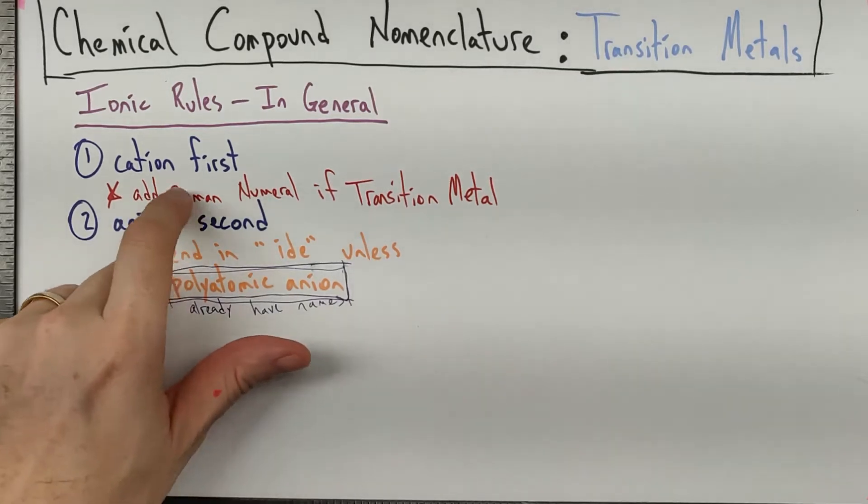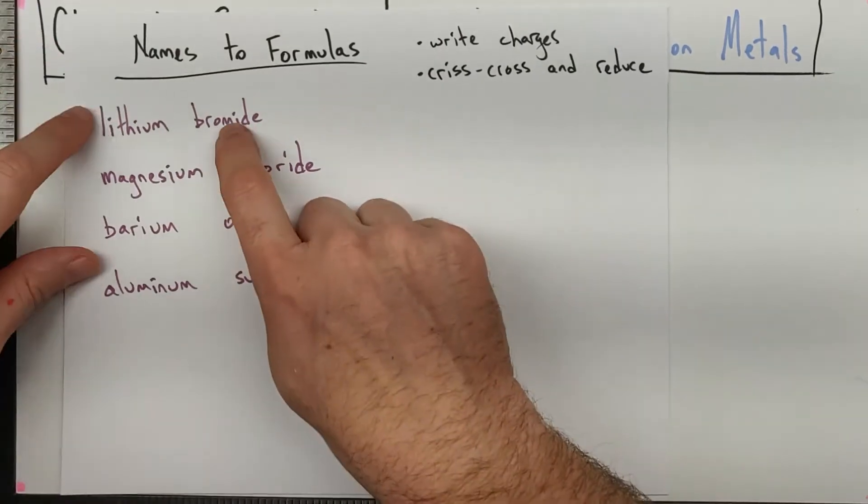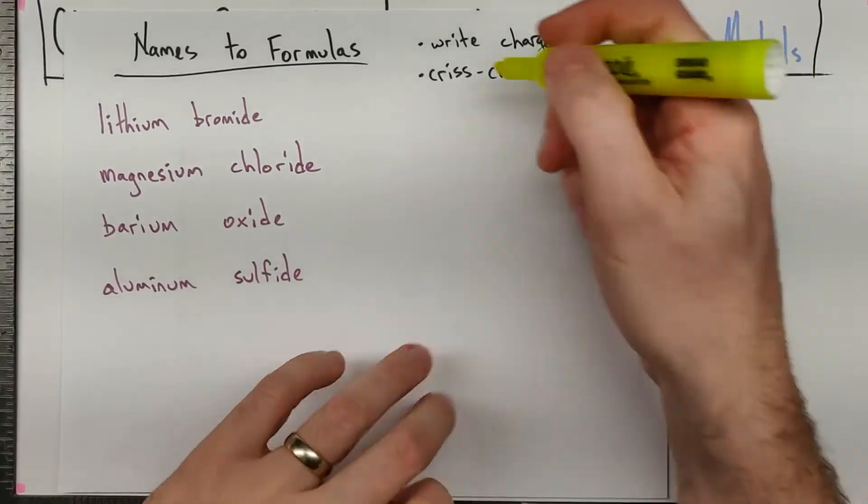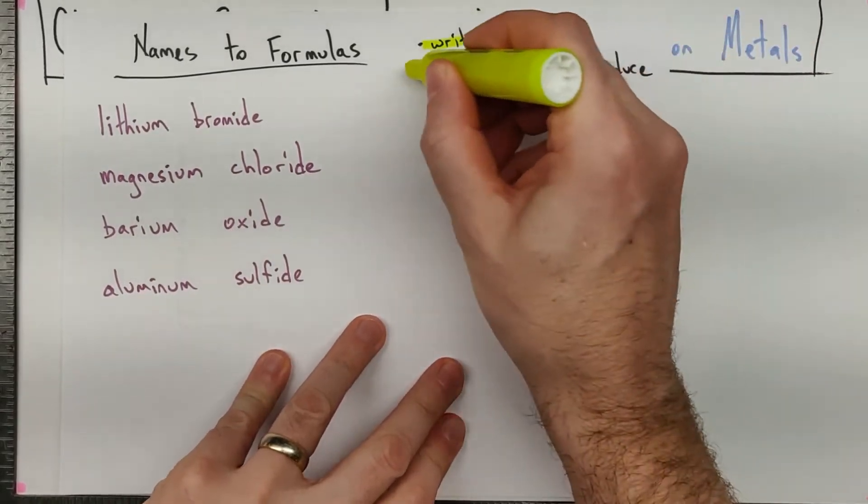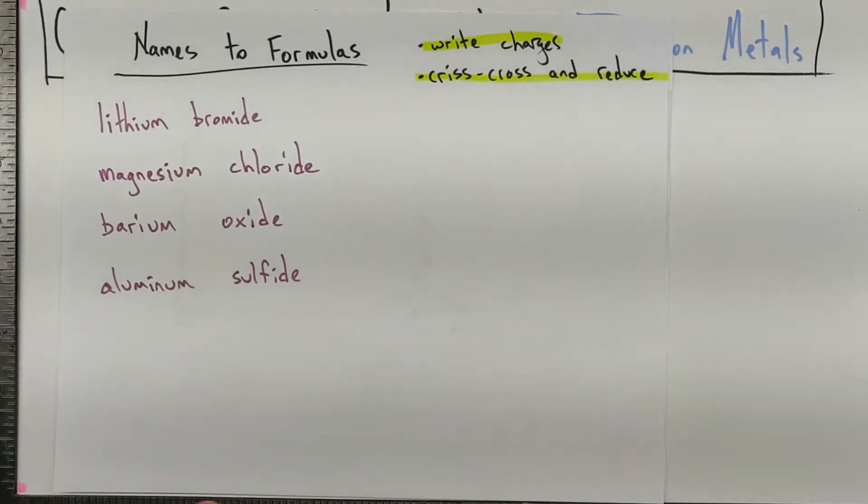Before we get into the nuances of adding Roman numerals to names, I want us to start at the other end of things and take some names and turn them into formulas. And there's two basic steps here, one of which is writing charges and the other of which is crisscrossing and reducing. And all this crisscrossing and reducing is a way to find least common multiples and make charges cancel out.